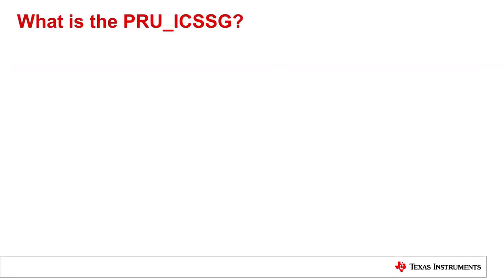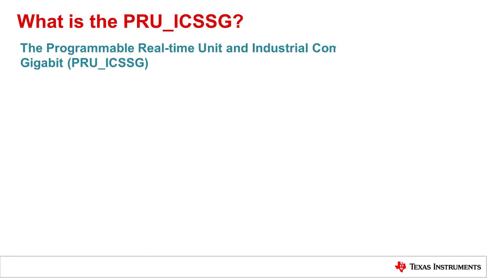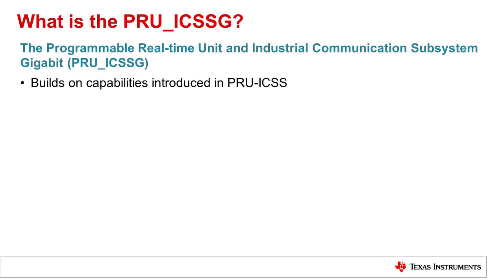Let's start with the basics. What is the PRU-ICSS-G? The PRU-ICSS-G stands for Programmable Real-Time Unit and Industrial Communication Subsystem for gigabit speeds. As previously stated, this is the next generation subsystem to the PRU-ICSS, building on the features and capabilities of that original subsystem.